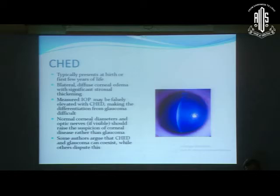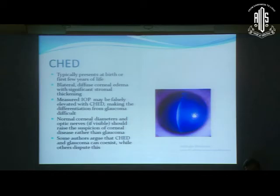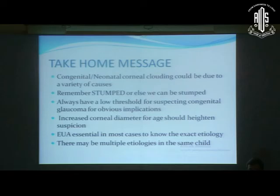Congenital hereditary endothelial dystrophy (CHED) is relatively common and typically presents at birth or in the first few years of life. There is bilateral diffuse corneal edema with significant stromal thickening. The measured IOP may be falsely elevated in CHED, making differentiation from glaucoma difficult. Importantly, normal corneal diameters and optic nerves should raise suspicion of corneal disease rather than glaucoma. Some authors argue CHED and glaucoma can coexist, while others dispute this.